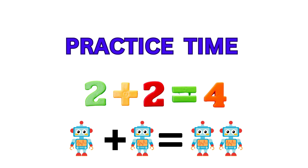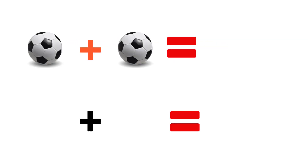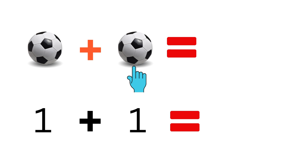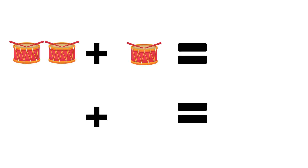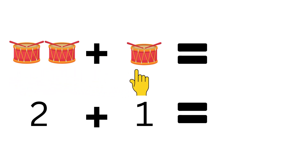Now, practice time. One ball plus one ball is equal to how many balls? Let's count: one, two. In total, two balls. Next, two drums plus one drum is equal to how many drums? Let's count: one, two, three. In total, three drums.